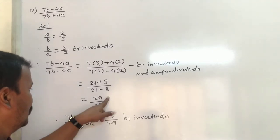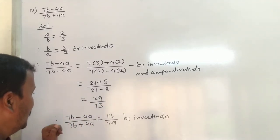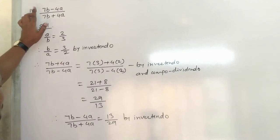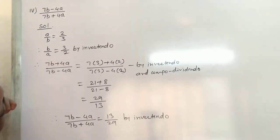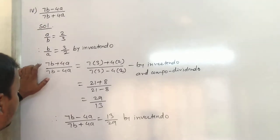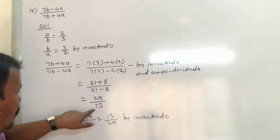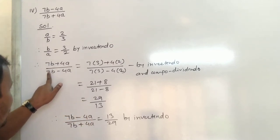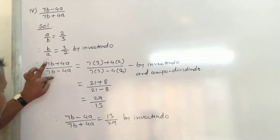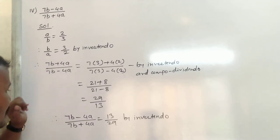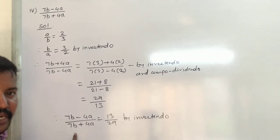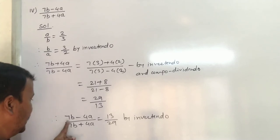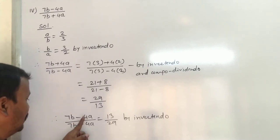So the answer for 7b minus 4a upon 7b plus 4a is 13 upon 29. By the inverted law, we can also write 7b minus 4a upon 7b plus 4a.